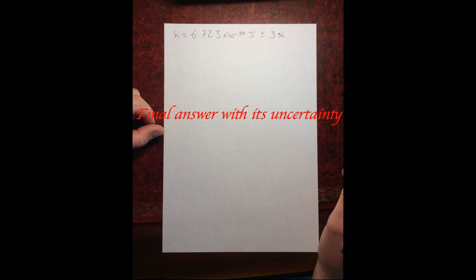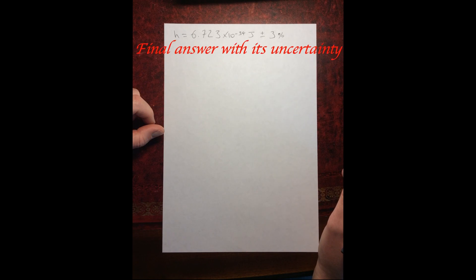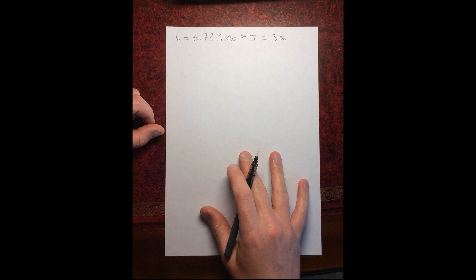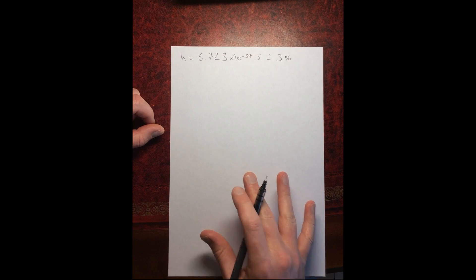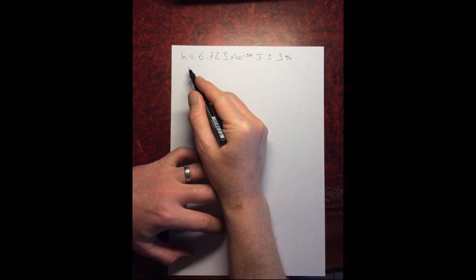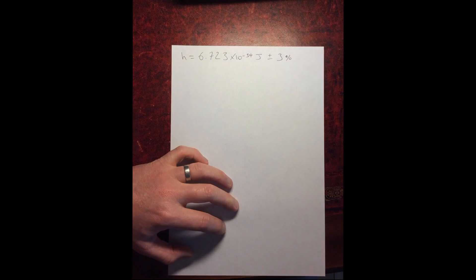In this video, I want to talk about how we quote our final answer when we know the uncertainty in it. So let's take an example where we've calculated a value for Planck's constant — if you remember, earlier this year we did an experiment with LEDs to calculate a value for Planck's constant.